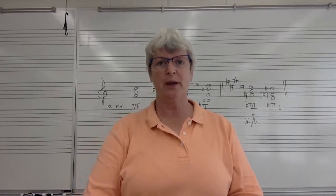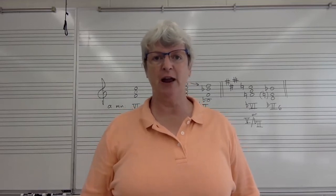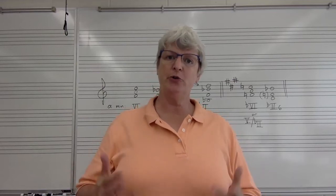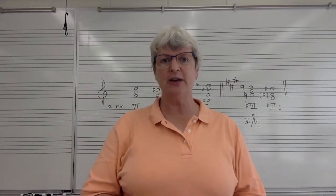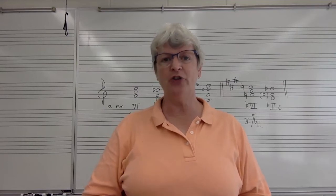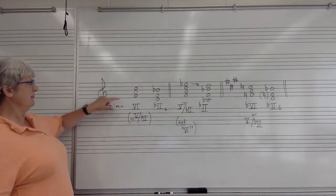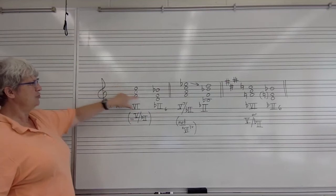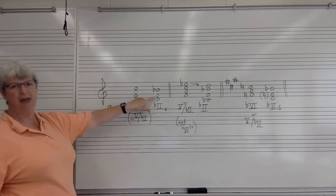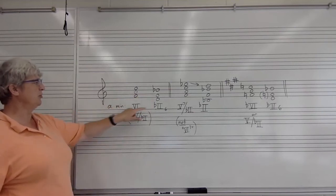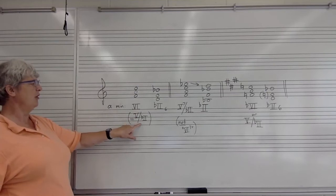As I said in an earlier lecture, flat 2 can be tonicized, and in this way it's different from the 2-diminished triad that you have in minor keys. As you'll recall, you can never tonicize a diminished triad, but you can tonicize a major triad. In minor keys, the 6 chord is also 5 of flat 2. So if you take a look at the board, you can see that in A minor, I've written a 6 triad, and I've shown it going to a flat 2-6 chord. F is the dominant of B flat. So if you see this progression, you can either call this 6, which is what it is, or you can call it 5 of flat 2.